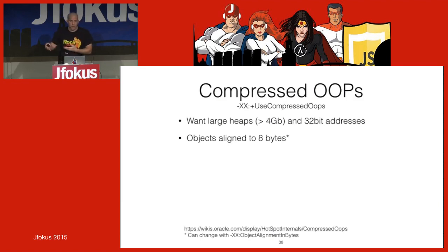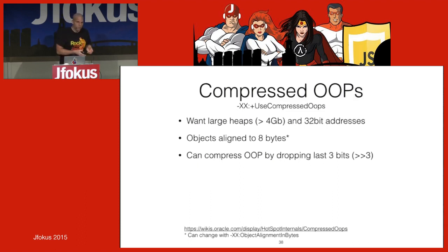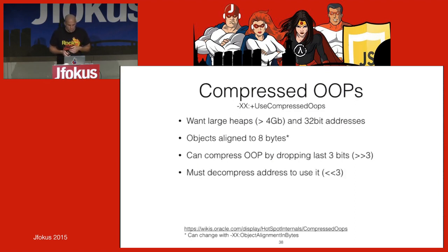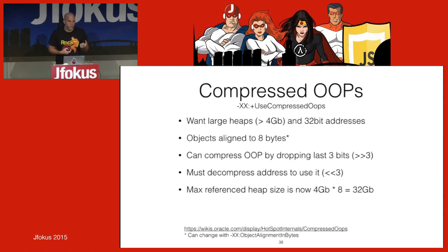Compressed OOPs are the read barrier in OpenJDK. We use them to get larger heaps without fat pointers. Because objects are eight-byte aligned, the low bits of an address are always zero, so we can shift right by three bits to compress the pointer. This lets us address heaps up to 32 GB where before we could only address 4 GB. A bonus: references are smaller so more objects fit in L1/L2 cache.